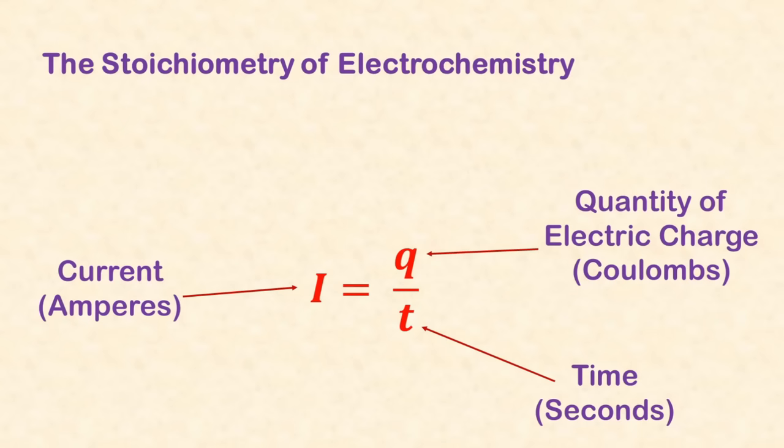An external electricity source passed through a solution will power an electrolysis process. To determine the amount of an element plated out, we use this equation. Electrical current in amps, I, equals electrical charge in coulombs, divided by time in seconds. Once you know the number of coulombs, you can calculate the amount of metal plated out.